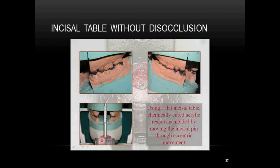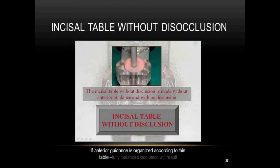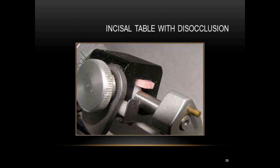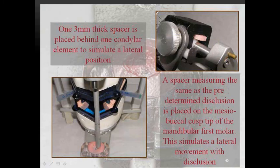The incisal table without disclusion is fabricated: a flat incisal table is used with chemically cured acrylic resin molded by moving the incisal pin through eccentric movements. Two copies are made — one for the final restoration, one to be modified into the incisal table with disclusion. If anterior guidance is organized according to the incisal table without disclusion, you get fully balanced occlusion. Then 3 mm plastic indices are placed into the fossa boxes to simulate protrusive and lateral excursive movement, with a vinyl sheet of 0.5 mm and 1 mm thickness placed to create posterior disclusion.